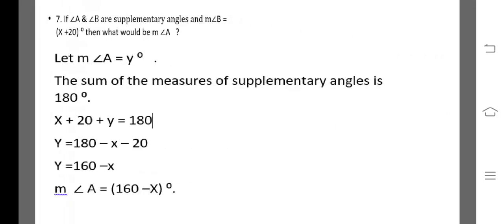The next sum. If angle A and angle B are supplementary to each other, and the measure of angle B is equal to x plus 20, then find the measure of angle A. Let us consider angle A to be Y. We know the sum of supplementary angles is 180 degrees. So x plus 20 plus Y is equal to 180. Y is equal to 160 minus x. Therefore, the measure of angle A is 160 minus x.